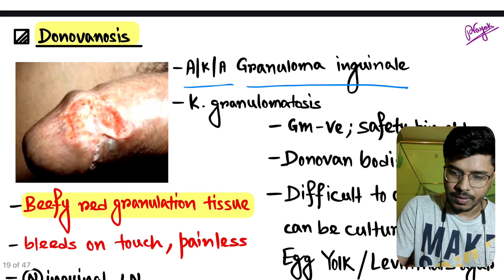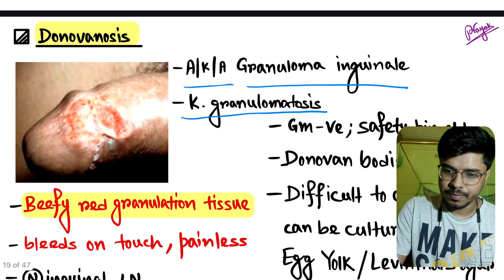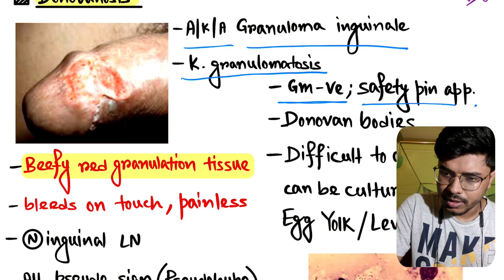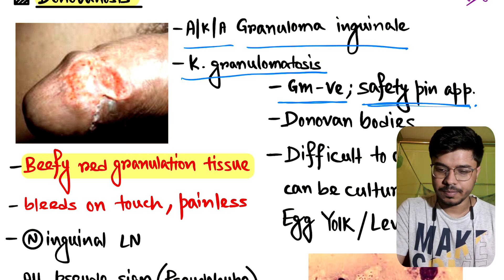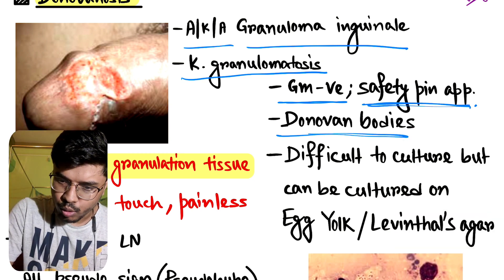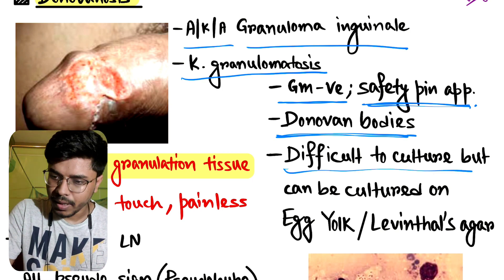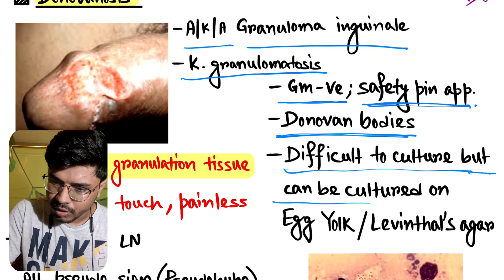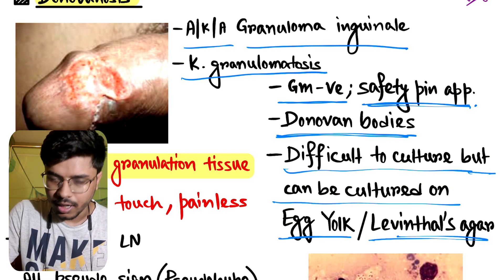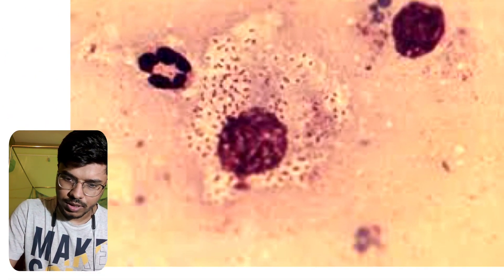It is caused by Klebsiella granulomatis, and it is a gram-negative bacteria. The appearance is safety-pin-shaped, and there are Donovan bodies. These are difficult to culture but can be cultured on egg yolk or Loeffler's serum agar.